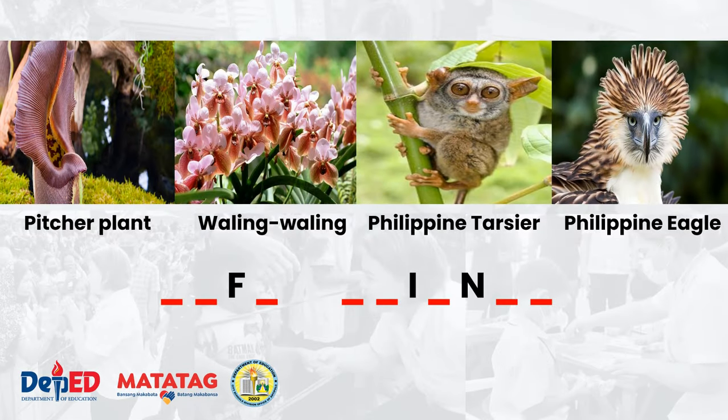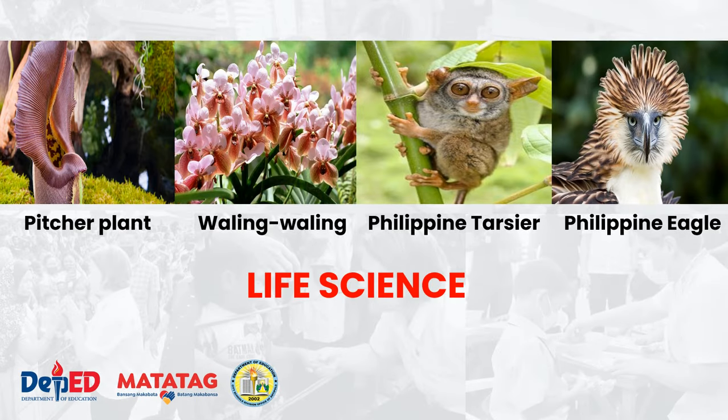I have here a simple puzzle with the following pictures: plant Waling-waling, Philippine tarsier, and the Philippine eagle. Please try to answer what the puzzle is all about. I'll give you 10 seconds to answer. Time is up — if your answer is life science, absolutely that's correct, very good everyone.